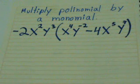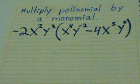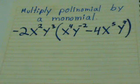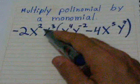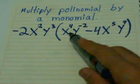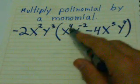Okay, here we have a multiplying polynomial by a monomial. To multiply a monomial by a polynomial, you have to multiply the monomial, that is this one, negative 2x squared y third, times both terms of the polynomial.